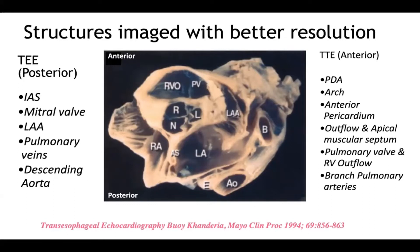In trans thoracic echo, the probe is anterior, so anterior structures are imaged with better resolution. Although both modalities show all structures in the heart, resolution is better for anterior structures with trans thoracic echo, whereas for trans esophageal echo it is the posterior structures.